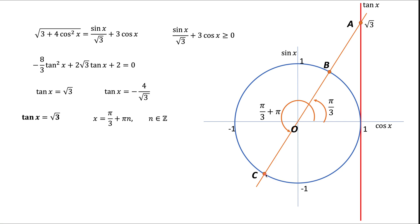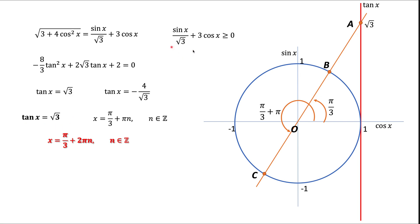For point C, both cosine and sine are negative. Adding two negative terms gives a negative result, so the non-negativity condition is not satisfied. Any angle giving us point C must be discarded. Point B corresponds to π/3 plus or minus any number of full circles (2π). So the final answer for this case is x = π/3 + 2πm, which satisfies both the tangent equation and the inequality.